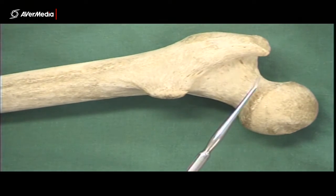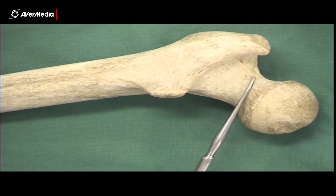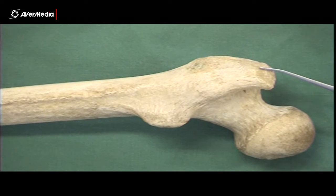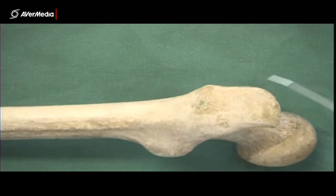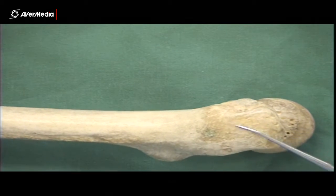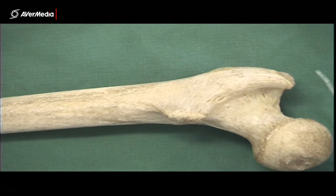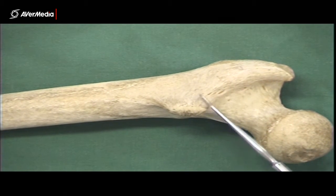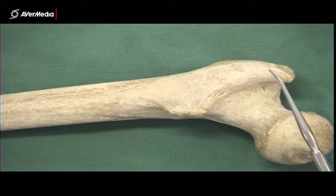We have the neck — remember there's no anatomical or surgical neck, there's just the neck. And then we have the greater trochanter and the lesser trochanter. The greater trochanter is quite large; from the lateral point of view you can see it's a big structure. Then in between the two trochanters we have the inter-trochanteric crest on the posterior aspect.